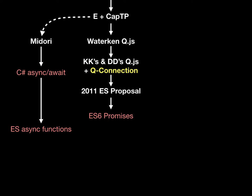Dean went off to Microsoft to do the Midori project, which is essentially the same computational model in a variant of C# they called M#. They used it at scale, and it had promise pipelining. Dean reports that they measured — in switching from Midori without promise pipelining to one with — they saw as much as a factor of 100 speedup, which is way more than I ever expected. So promise pipelining is a big deal, even a bigger deal than I expected.